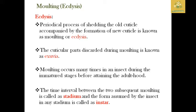The cuticular part discarded during moulting is known as exuvia. Moulting takes place many times in the insect during the immature stages before attaining adulthood. Based on the insect species, moulting takes place five, six, or even more times. The time interval between two subsequent moultings is called the stadium, and the form assumed by the insect in any stadium is known as the instar.